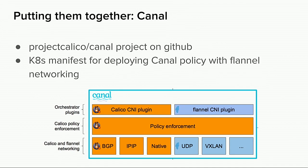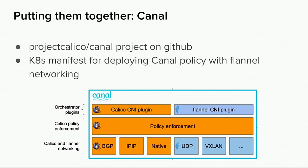Q: Did you say you don't need etcd anymore for Flannel? What do you do to keep state? A: The state is stored using the Kubernetes API. It reads and writes to the Kubernetes API server and stores the state as annotations on the node objects. You can use kubectl get nodes with output yaml to show the full details of all annotations on a node and see the few lines that Flannel adds there. Calico has that same support for talking to Kubernetes as well — currently that's focused more on third-party resources rather than node annotations. Thank you!